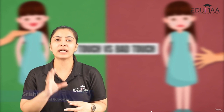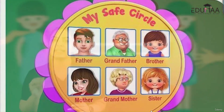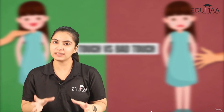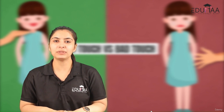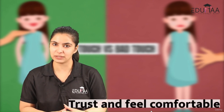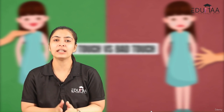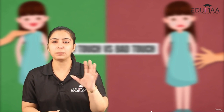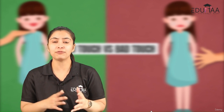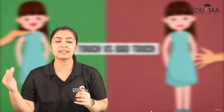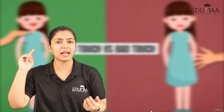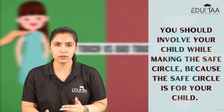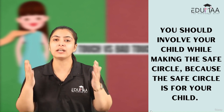A safe circle consists of people who you and your child can trust and feel comfortable with. It's really important to make a safe circle with your child. It's also important to involve your child while making that safe circle, because there can be moments where you trust and are comfortable with a person but your child doesn't feel comfortable around that person. That safe circle is for them only.